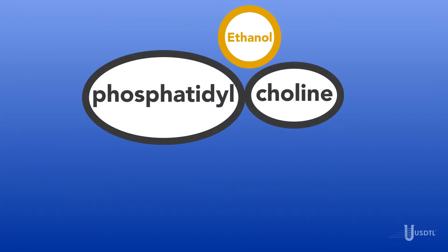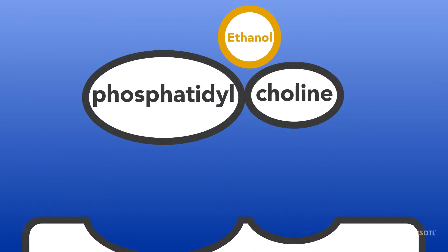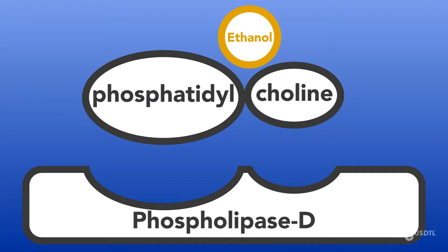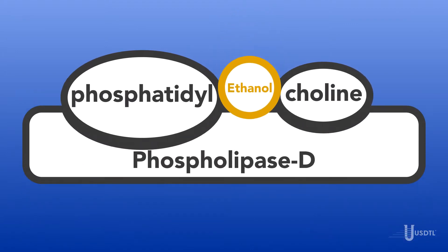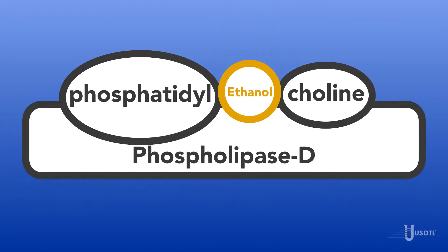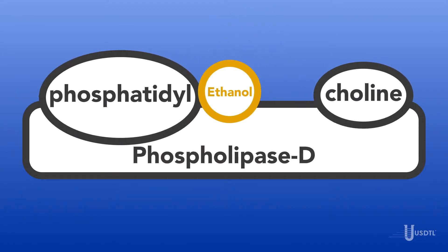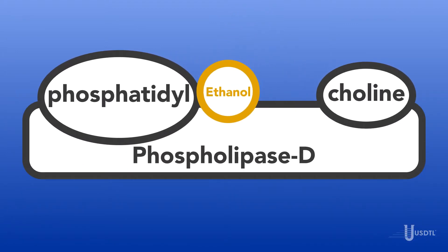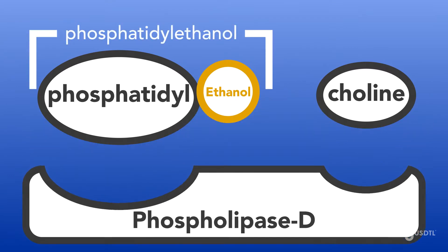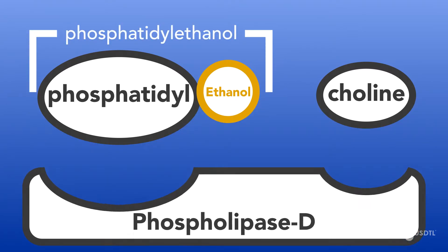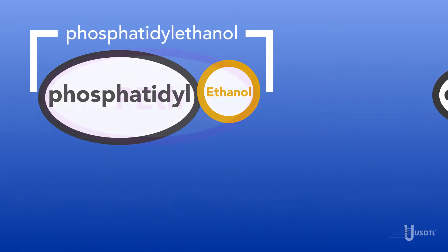The presence of ethanol interrupts this normal reaction. In this case, the phosphatidyl choline and ethanol are metabolized by the phospholipase D, forming the biomarker phosphatidyl ethanol in the membranes of the red blood cells.